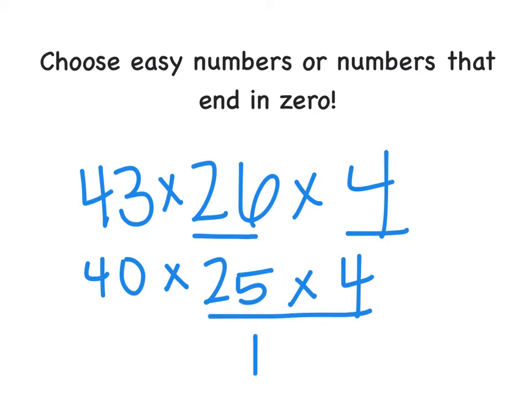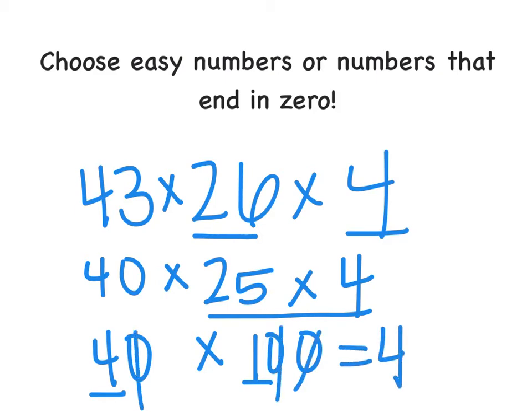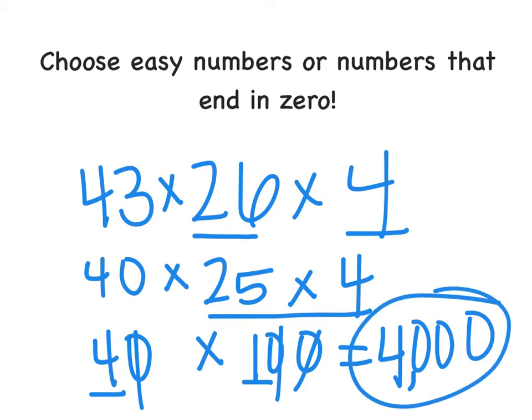So now when I multiply these, I get 100. So now I have 40 times 100. 4 times 1 is 4, and I need 1, 2, 3 zeros at the end to get my final estimate of 4,000. So sometimes, if you have some good compatible numbers or things that are close to compatible numbers, you don't need it to end in zero. Whatever works for you and is easiest for you is what you should do.